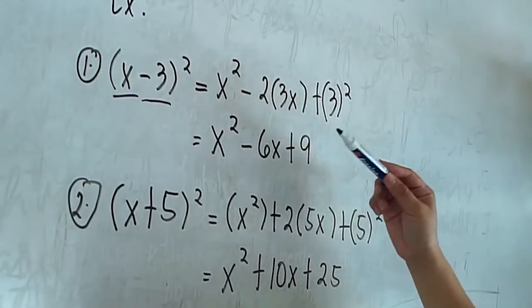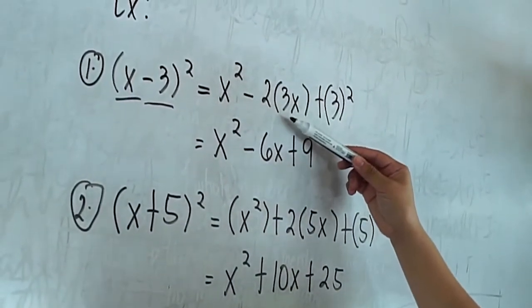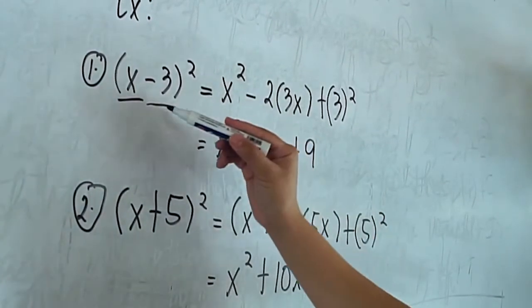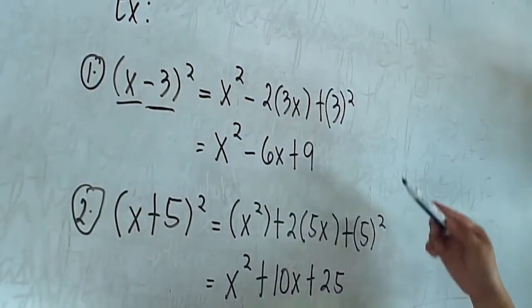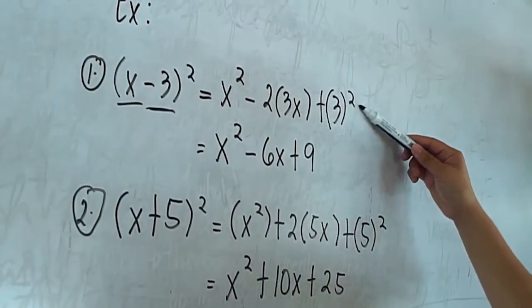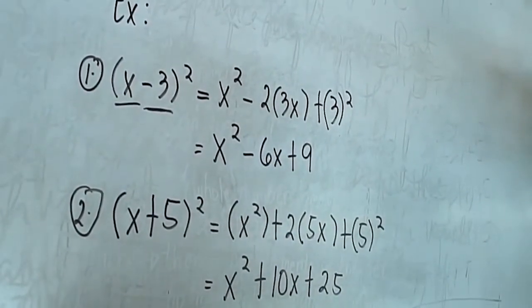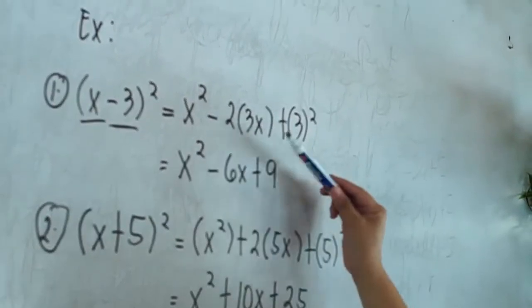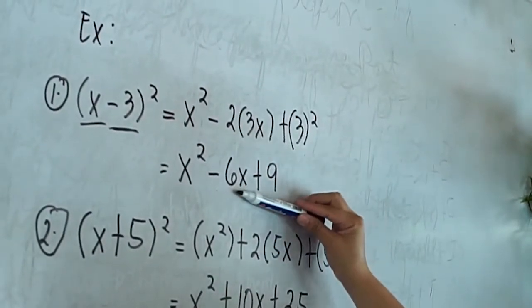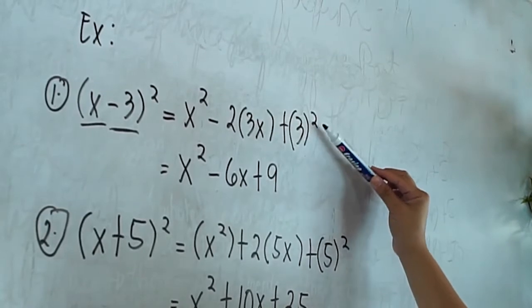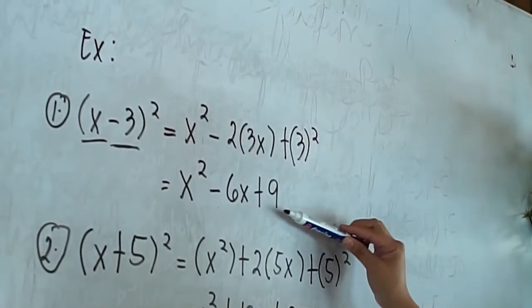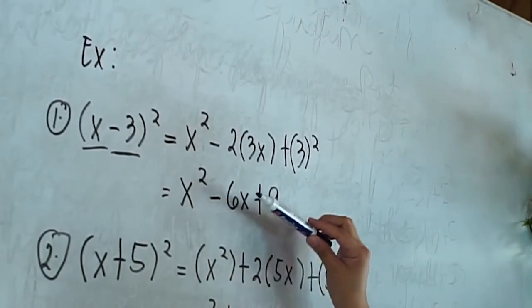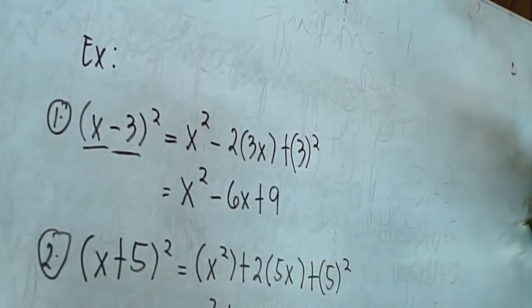It is written as 2 times 3x. Then the third one is the square of the last term, which is 3, so plus 3 squared. Then we simplify: 2 times 3x is 6x, and 3 squared is 9. So our final answer is x squared minus 6x plus 9.